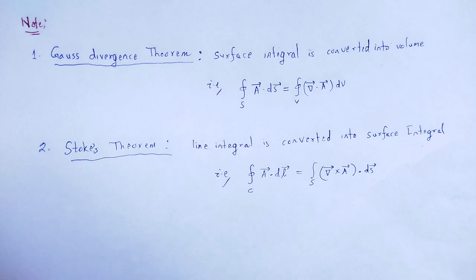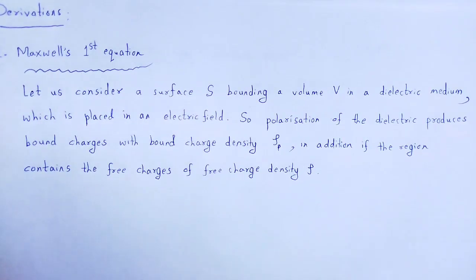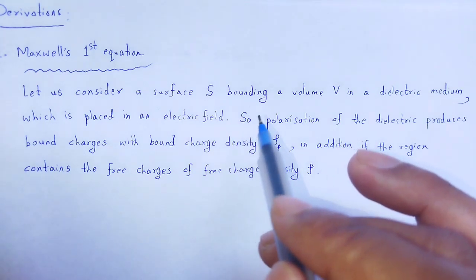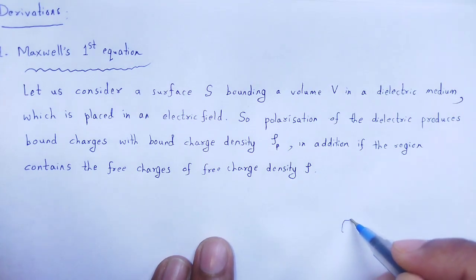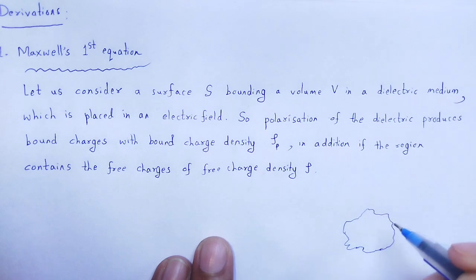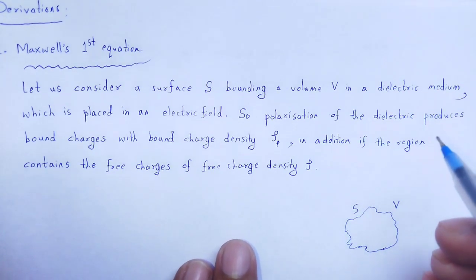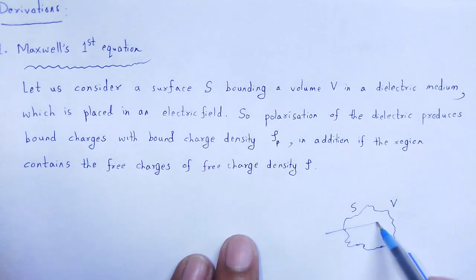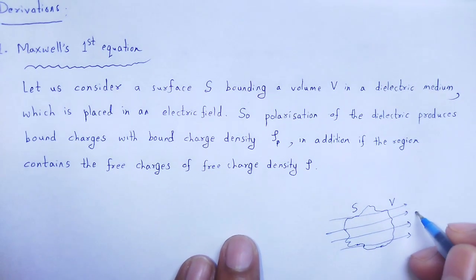Now let us derive Maxwell's first equation in both differential and integral form. Let us consider a surface S bounding a volume V in a dielectric medium. This surface S is placed in an electric field E.